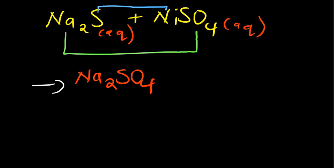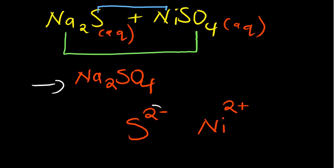In the other displacement, we have sulfite reacting with the nickel. Nickel has got a charge of 2+. Sulfite has got a charge of 2 minus. So whenever the charges of the elements are the same, we expect that they are going to be in the ratio of 1 to 1. So therefore, the product is going to be nickel sulfite.